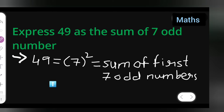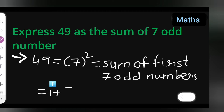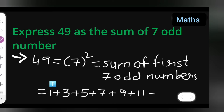Write down the first 7 odd numbers. The first odd number is 1, then 3, then 5, then 7, then 9, then 11, then 13. So: 1 plus 3 plus 5 plus 7 plus 9 plus 11 plus 13.